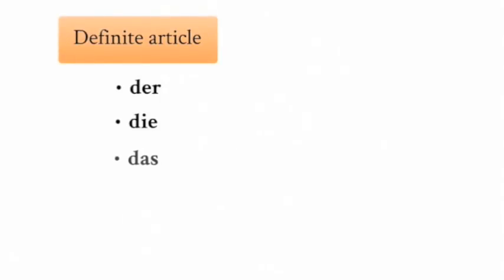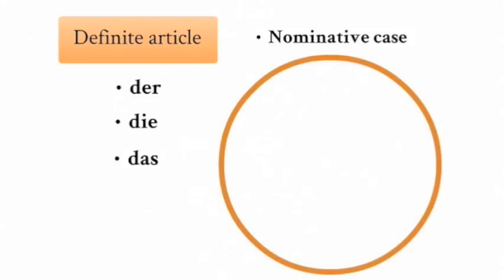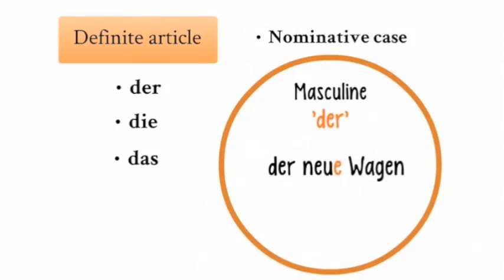Let's start with the definite article Der, Die, and Das in the nominative case. The first article is the masculine form Der. Here we have the example of Der neue Wagen, which can be translated as 'the new car.' Here you can see that in the case of Der, the adjective neu changes to neue: Der neue Wagen.